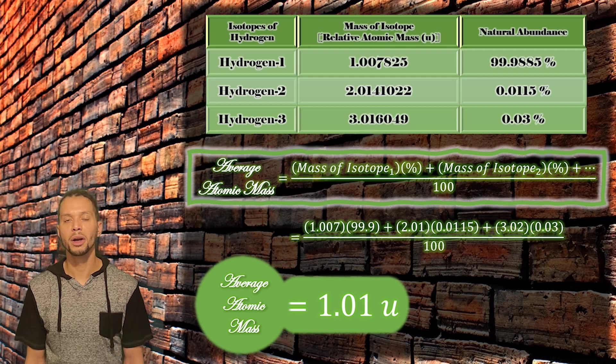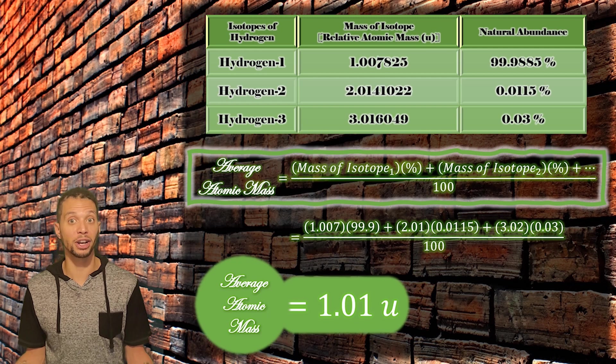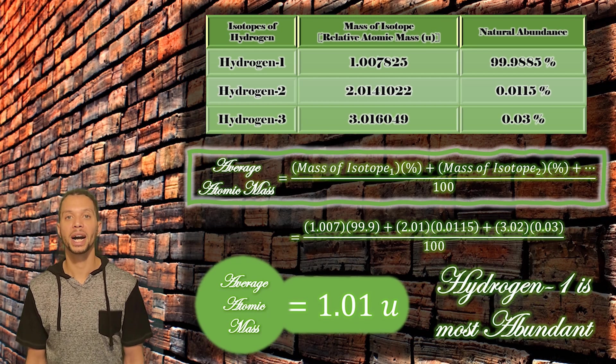Finally, based on the natural abundance of each isotope, I can determine which isotope is the most abundant on our planet, which in hydrogen's case is the isotope hydrogen-1.